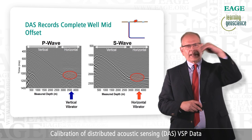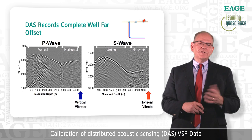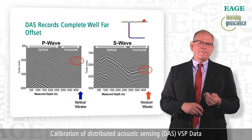Finally, this figure shows the same results for the far-offset source location. Again, the drop in the first break amplitudes is now at the toe of the well where the source is located.